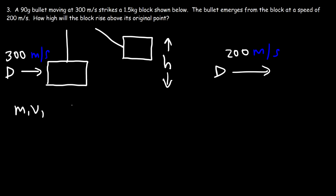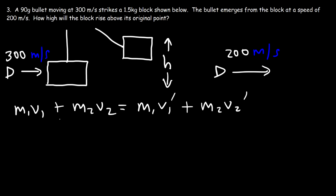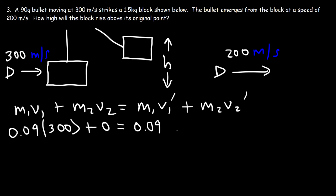The initial momentum of the bullet plus the initial momentum of the block equals the final momentum of the bullet plus the final momentum of the block. Since the bullet passes through, they do not share the same final speed, so we need separate terms. The mass of the bullet is 0.09 kilograms at 300 m/s; the block's initial momentum is zero. After the collision, m1 is still 0.09 and the bullet's speed is 200. m2 is 1.5, and we need to find the velocity of the block.